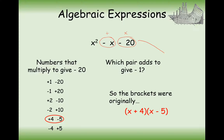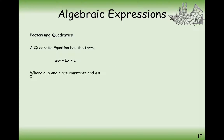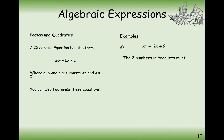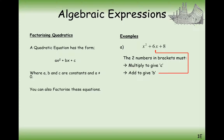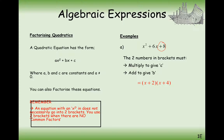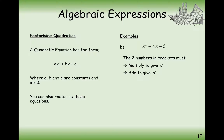You can always check your answer by expanding the brackets, and that should give you your question back. So the two numbers in the brackets must multiply to make the c — the 8 at the end — and they must add together to make the b, the 6. In this case, 4 times 2 is 8 and 4 add 2 is 6. So this is our final answer. This equation only works when there's just an x squared at the front of the expression.